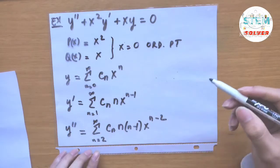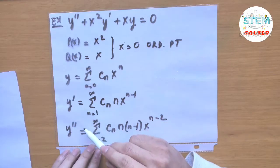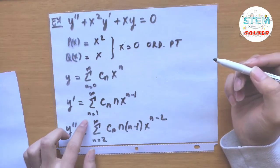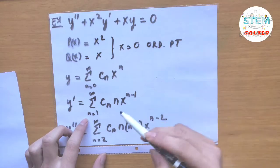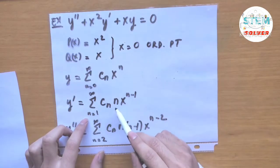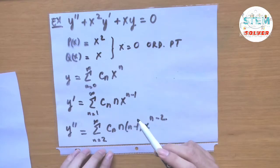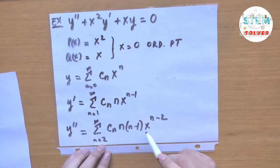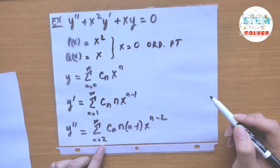Note that n doesn't start at 0 for y prime and y double prime. For y prime, n doesn't start at 0 because plugging in 0 makes the term become 0. Same for the second derivative — if you plug in 0 or 1, it makes the term 0. That's why the second derivative must start at n equals 2.